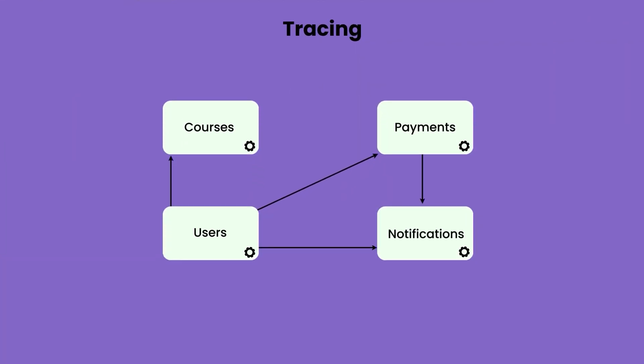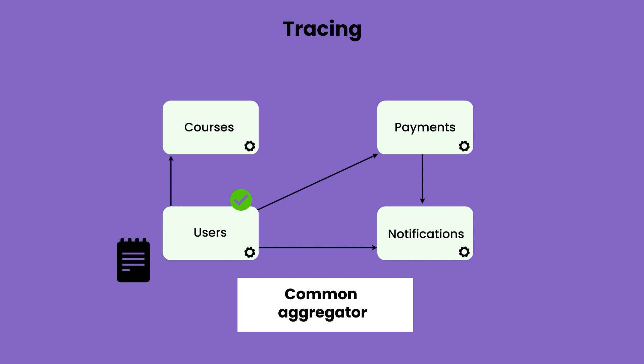One more approach used in observability is tracing, where anytime a service implements a business flow it produces a trace for it. Sometimes logs can be used as traces as well — the data in logs can serve as traces. There would be one common tool to collect that tracing data, allowing you to figure out the series of events that took place across different systems, where the problem actually happened, and how different services are actually interacting with each other.